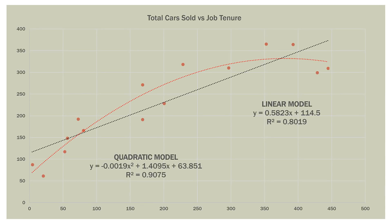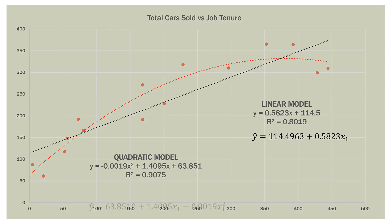We can graph both models in the same plot and see that the red dashed line — the quadratic model — fits the data better than the black dashed line, which is the linear model. The R-squared value is much higher in the quadratic model, so more variance is explained. This is exactly what we want.